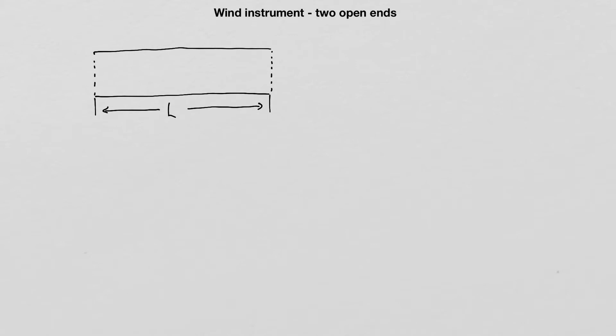The first wave with the longest wavelength that I can fit in the pipe will have a standing wave with antinodes at the two openings, which means inside the pipe there will also be an antinode. This is the standing wave pattern excited inside the pipe: two antinodes — one at each end — and a node straight in the middle.